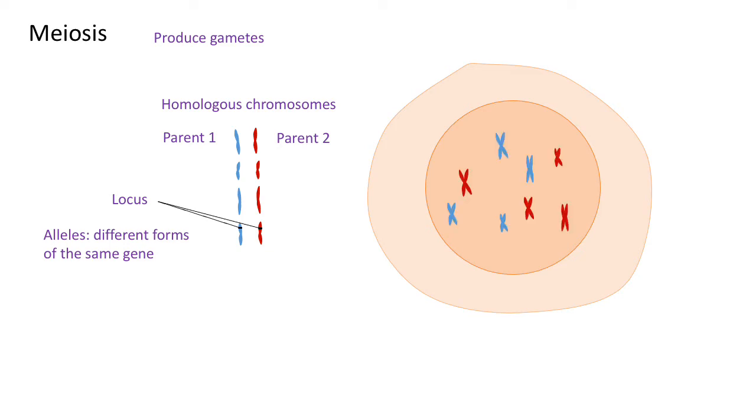Then during prophase one, DNA will condense to form chromosomes. Because those chromosomes are replicated, we see them with two chromatids.